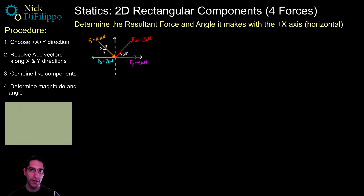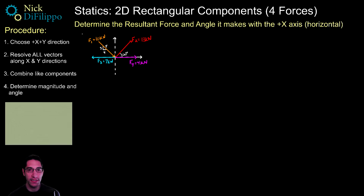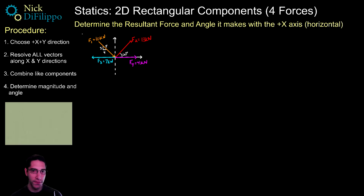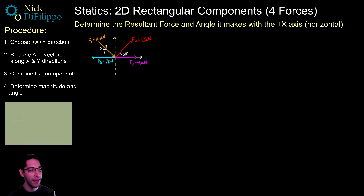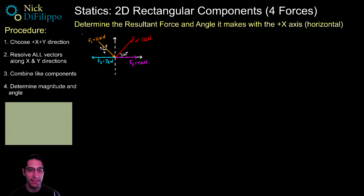In this problem, I would like to look at a system that has four different forces and use 2D rectangular components to determine what the resultant of these four forces is and the angle that these forces make with the x-axis. We could use this procedure for two forces, three forces, five, ten, or twenty different forces — just follow the steps to get the resultant and the angle it makes with any axis.